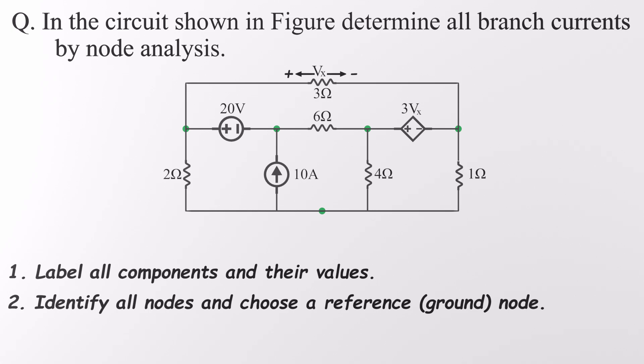Next, we pick one as our reference. The smart move? Choose the node connected to the most components. It usually makes the math simpler. In this case, I'm picking the one linked to the current source and three resistors. That's a solid choice. But don't stress, no matter which node you choose, your final branch currents will be the same. The only difference is how the equations look along the way. With our reference node set, let's keep going.